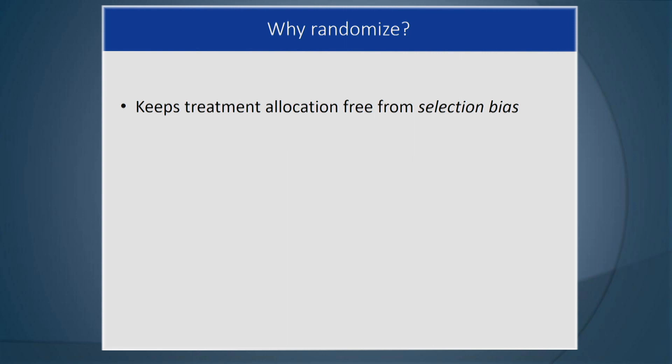Now we're going to talk about why we randomize. There are several reasons. First, it keeps treatment allocation free from selection bias. We don't want investigators, staff, or any human being deciding who goes to which treatment. Human beings, intentionally or unintentionally, are biased. So we want the assignment to be completely objective — we let a computer program assign the treatment to participants.